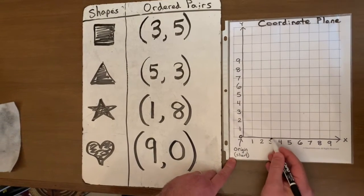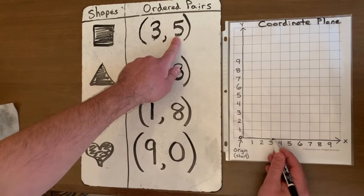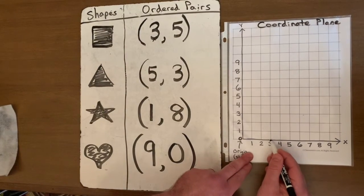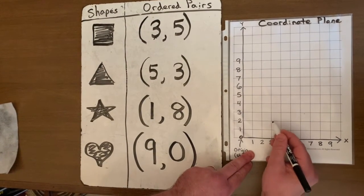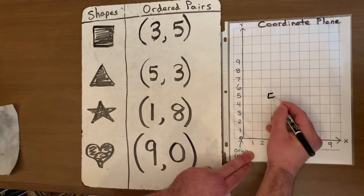One, two, three. And I'm going to hold off here for a second to see how high up I need to go. And I need to go up five places. So at the three I'm going to go up five. One, two, three, four, five. And that's where I'm going to mark my square.